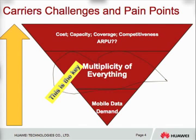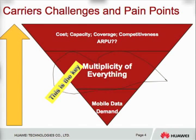The first one is the mobile data demand, and I talked about that — no mistake about how much data is needed. So in order to solve this mobile data demand, we have to create a lot of multiplicity in the network. Some of them we created ourselves, some of them are created without us even being involved.